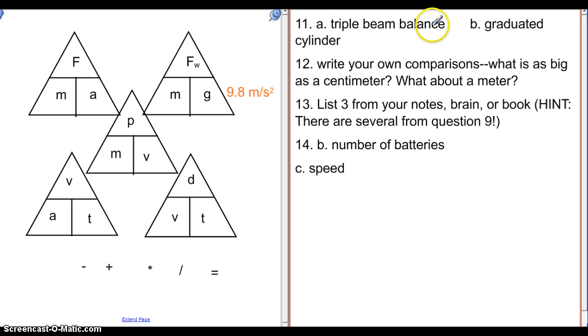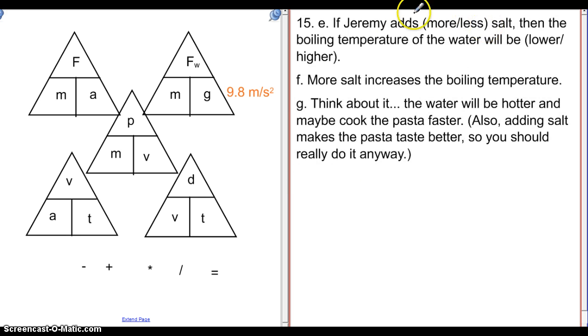For number 11, you measure mass with a triple beam balance and volume with a graduated cylinder. You need to come up with your own comparisons. For number 12, think about how big those are. And for number 13, you needed to list three from your knowledge. And as a hint, if you go back to question 9, there are actually several there for you. For number 14, the independent variable was the number of batteries. So think about the thing that the person changed for the experiment. And then for the thing that was measured for the experiment, that was the speed of the car.